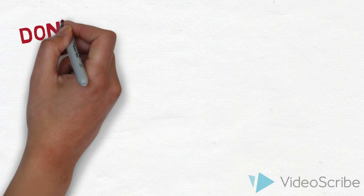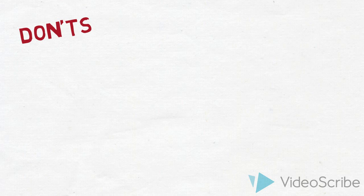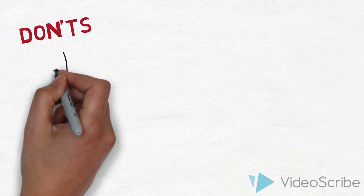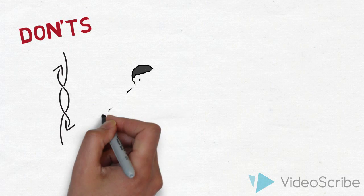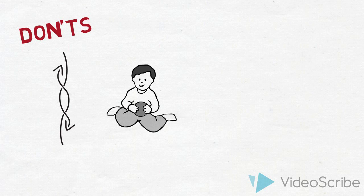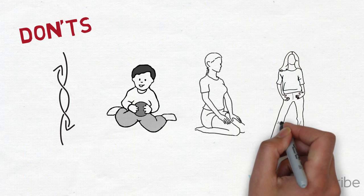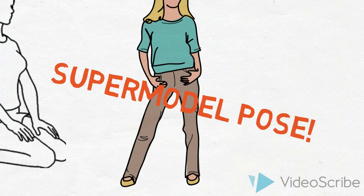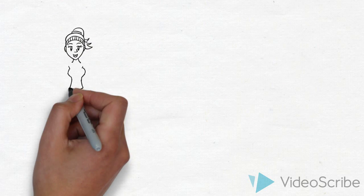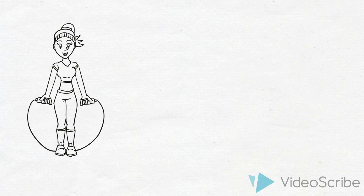In general, for the hypermobile person, resting in end range of movement positions should be avoided. This means no sitting with your legs intertwined, sitting on the ground in a W shape or your legs tucked under your bottom, and standing with most of your weight on one leg. It is best to keep active within a normal range of movement for you and improve your general fitness.